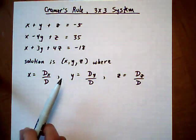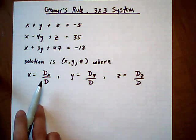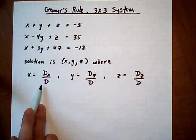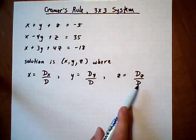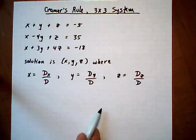And the solutions are given by x is Dx over D, where Dx and D are two different determinants, and we'll show how to build those. And y is Dy over D, again determinants, and same with z, ratio of determinants.